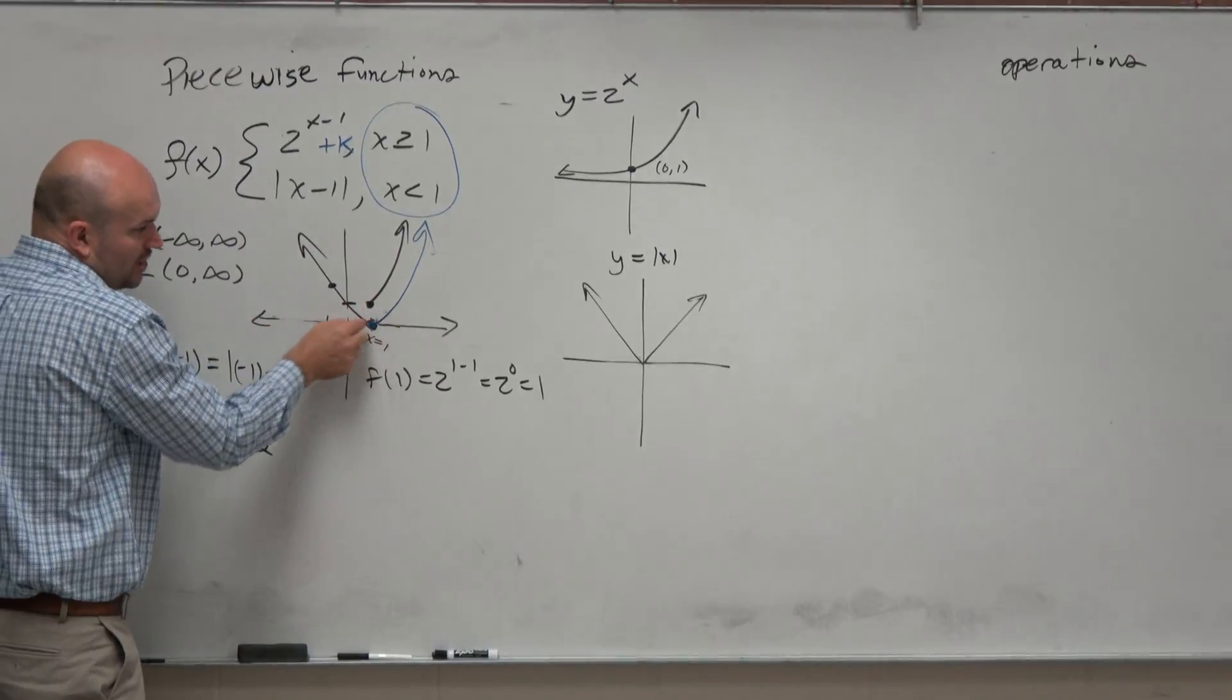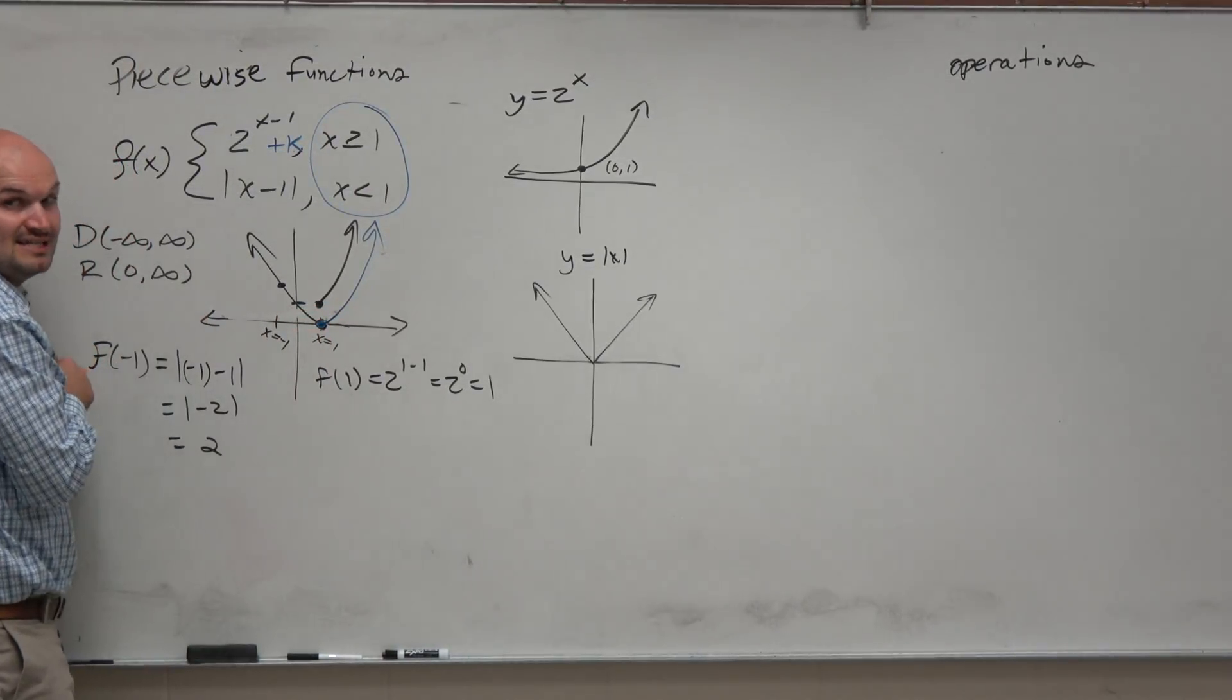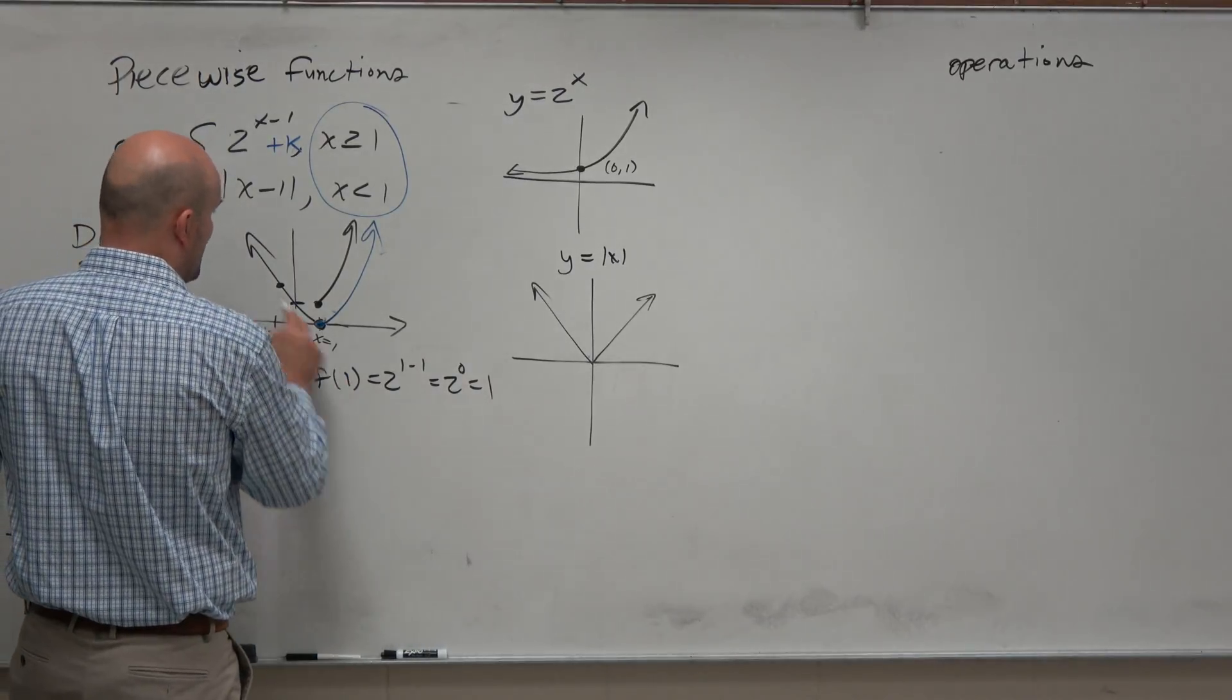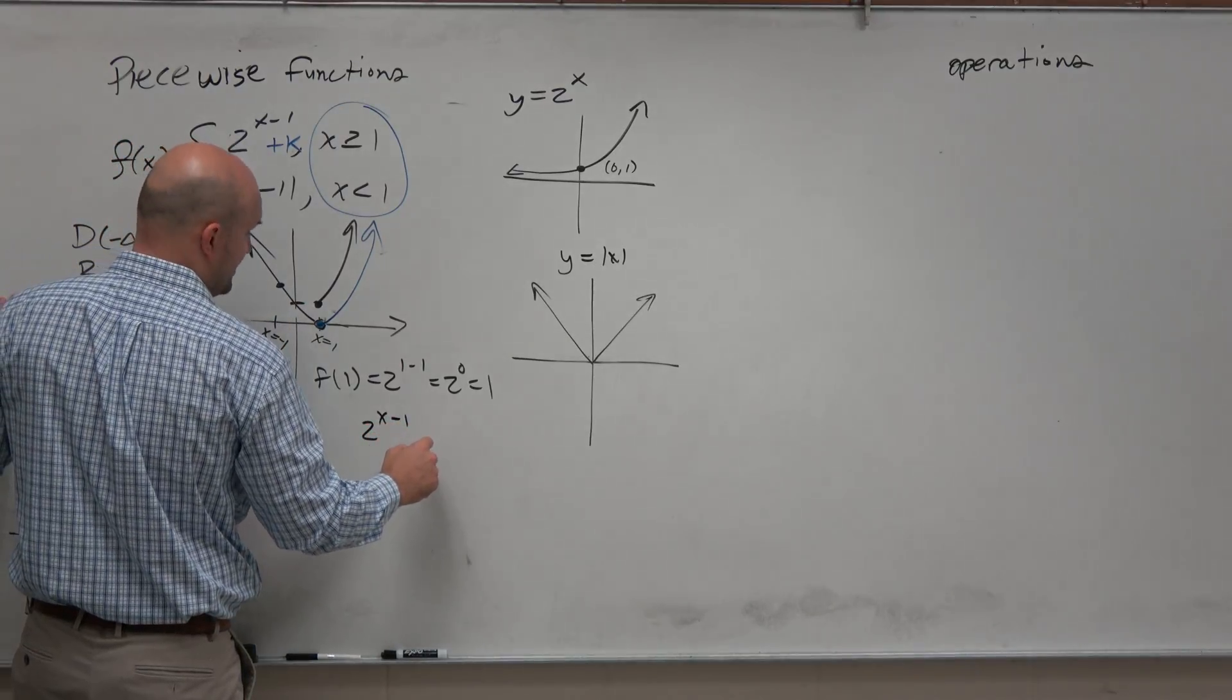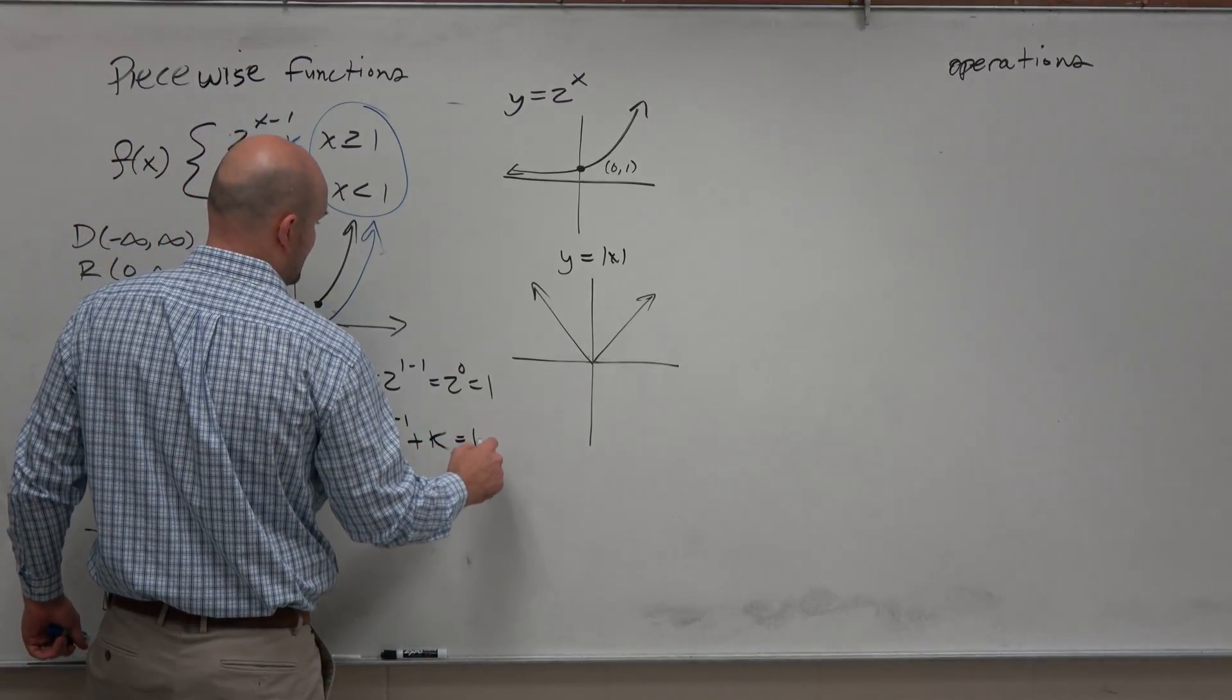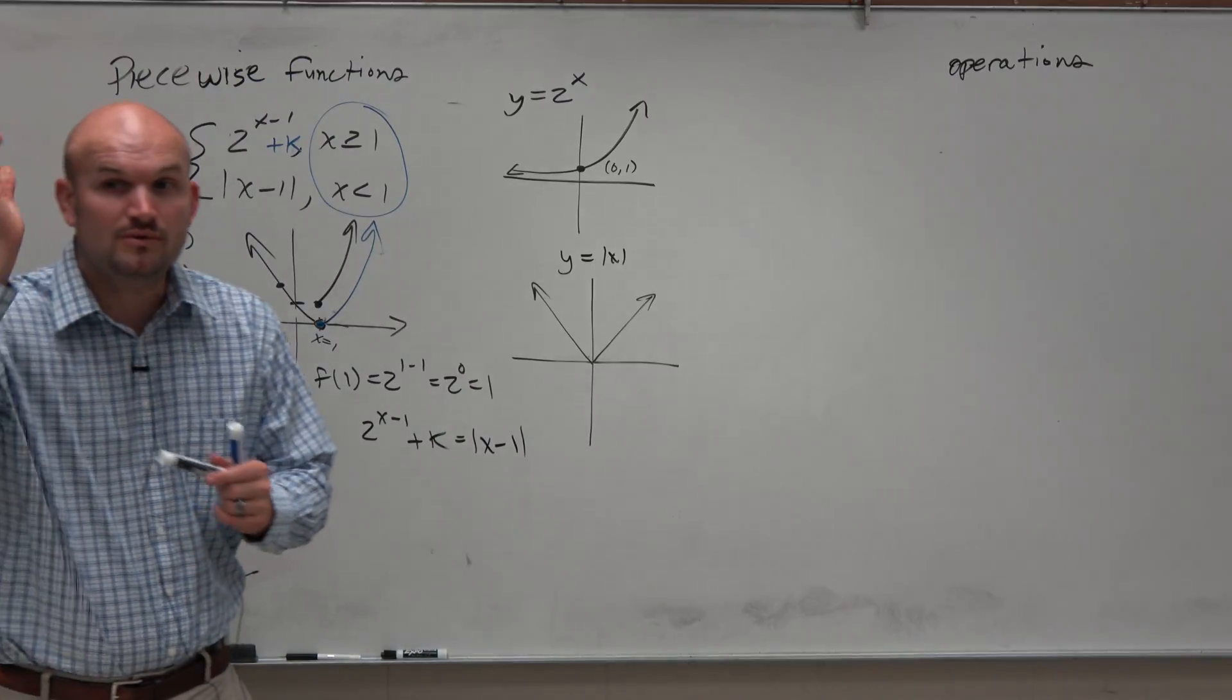So if they are continuous, that means they share this point. That means the x and the y value is the same. So to represent that algebraically, we want these two equations to be the same, so therefore, we're going to set them equal to each other, which is basically saying we want the y values, because those are both set equal to y, to be the same. And we want them to be the same when x is equal to 1.